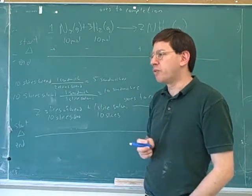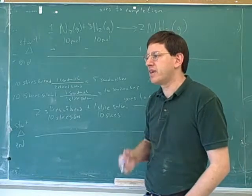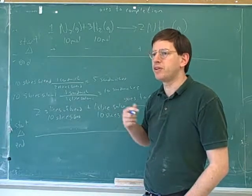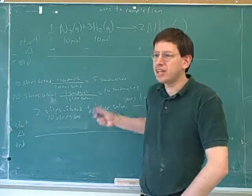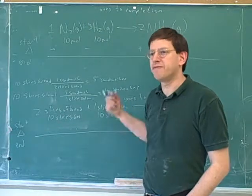The limiting reagent is what we're going to run out of first. This is a concept we use all the time in the kitchen. When you're deciding whether you need to go shopping, you have to ask, well, what am I going to run out of first? So someone might look here and say, 'Gee, I don't need to go shopping for a long time because I got plenty of salami.' But they would be wrong because they forgot their limiting reagent, which is the bread.